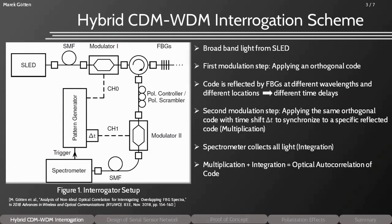In the hybrid CDM-WDM interrogation scheme, broadband light from an SLED is modulated according to a specific code sequence. This modulated light enters the sensor network via the circulator. In the network, each FBG reflects this code. Due to the different locations and different optical path lengths, all codes arrive with a different time delay at the second modulator. This modulator is driven with the same code but shifted in time. The time shift can be used to synchronize to a specific code reflected by an FBG, which can ideally pass the second modulator and reach the spectrometer.